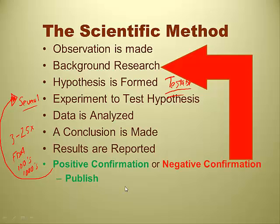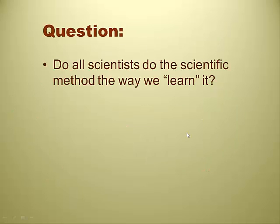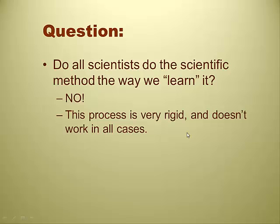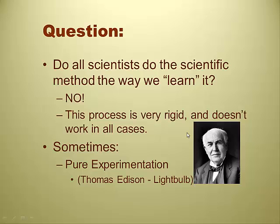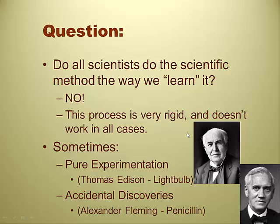Negative confirmations go right back to the background research. Do all scientists do the scientific method the way we just showed? Turns out, no. Science is a rigid process, but it doesn't always have to follow that same format — sometimes we wind up with pure experimentation. Thomas Edison invented the light bulb; his lab notebook had hundreds of experiments written down. He tried a feather, experiment failed, experiment failed — hundreds of different things before he came across a tungsten filament. There are also accidental discoveries — Alexander Fleming accidentally discovered penicillin.